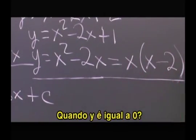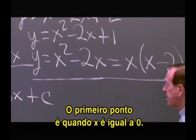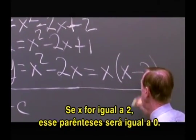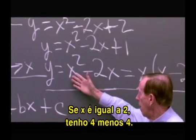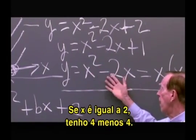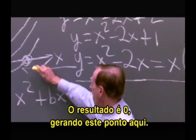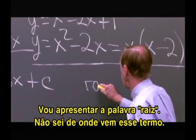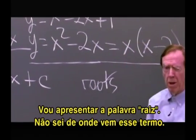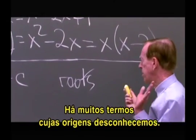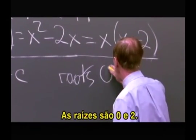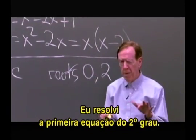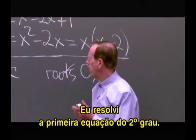When is this zero? Well, the first factor could be zero — that's x equals zero, that's this point. Or x could be 2, and then the second factor goes away. If x is 2, I'd have 4 minus 4 — I certainly get zero. And that's this point. So the two roots are 0 and 2. I have solved that first quadratic.